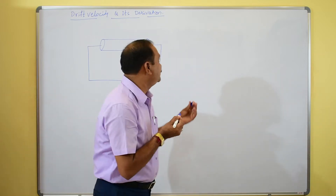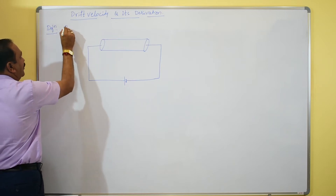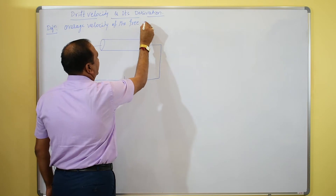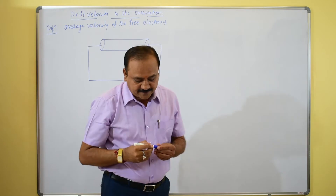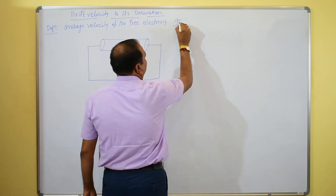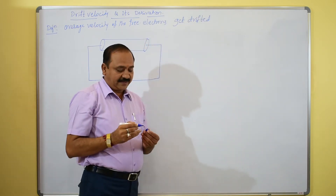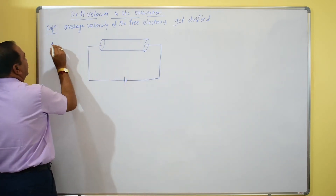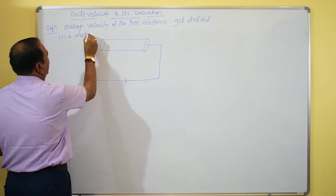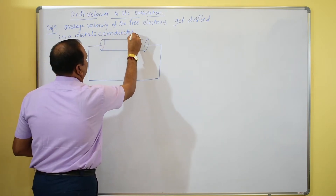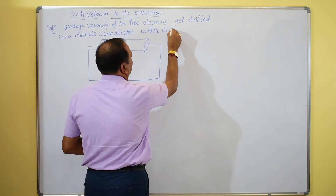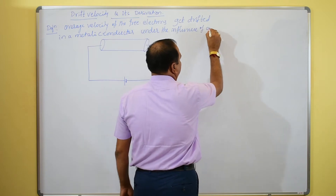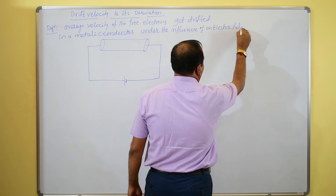Drift velocity is the average velocity with which free electrons get drifted in a metallic conductor under the influence of an electric field. This is a simple concept — in this conductor the free electrons get drifted in a particular direction under the influence of the electric field.